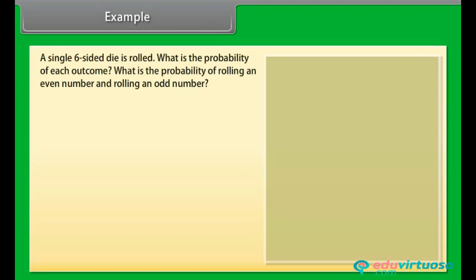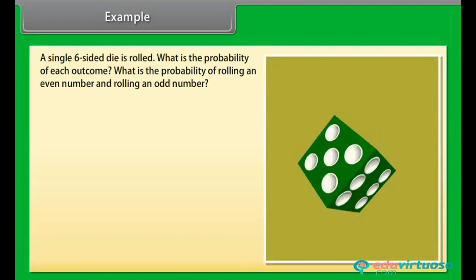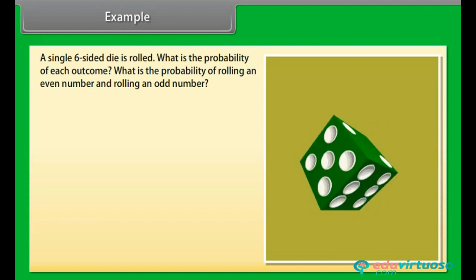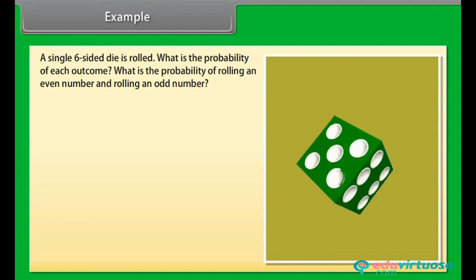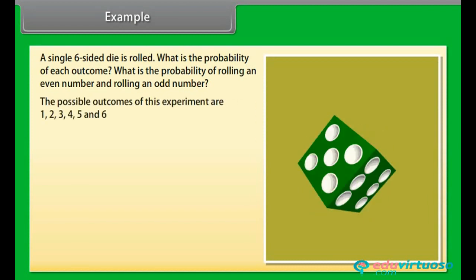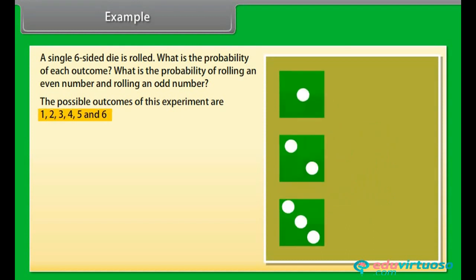A single six-sided dice is rolled. What is the probability of each outcome? What is the probability of rolling an even number and rolling an odd number? The possible outcomes of this experiment are 1, 2, 3, 4, 5, and 6.